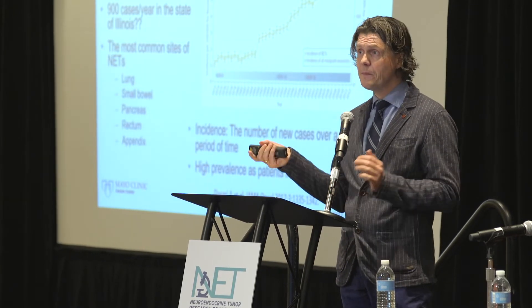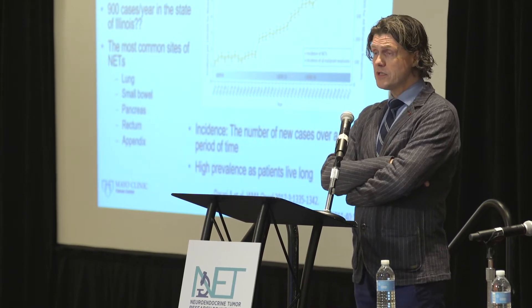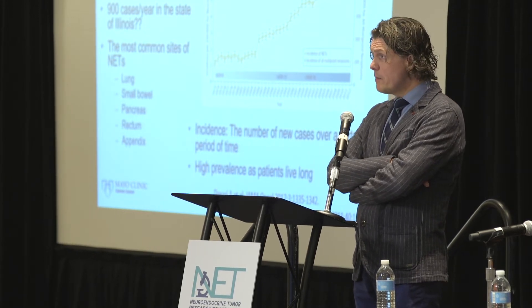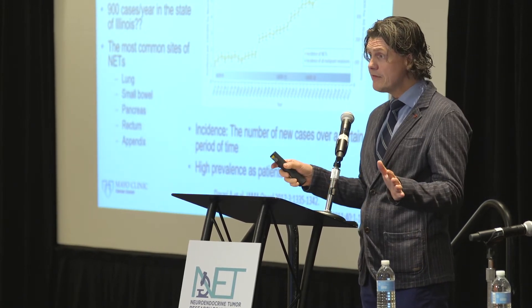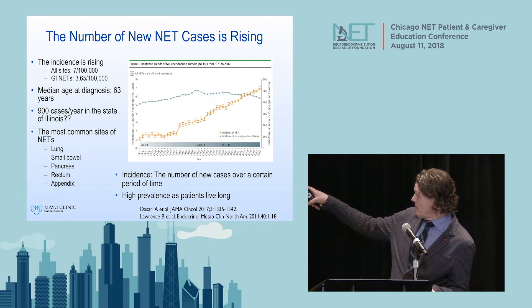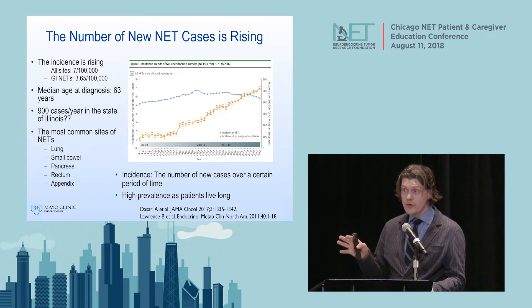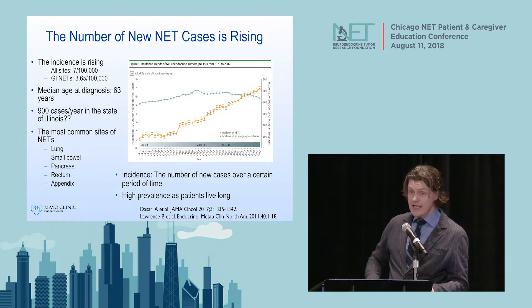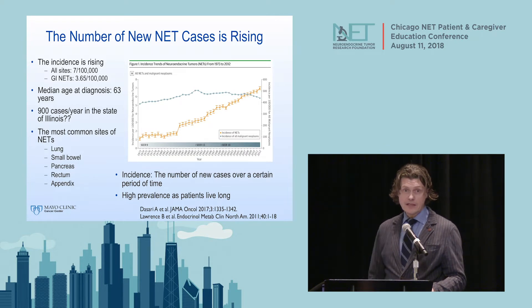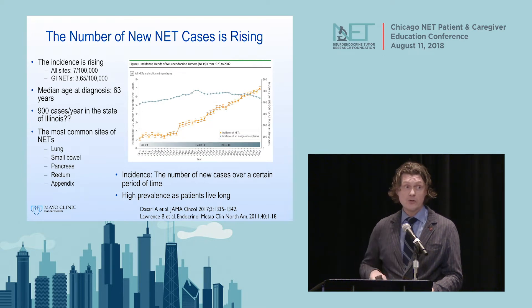How common are neuroendocrine tumors? They are not very common in terms of new diagnoses per year, but because patients with NETs live long compared to many other cancers, the total number of patients at any given time is fairly high. Looking at the graph, the blue line shows all cancers in the US since 1971, which hasn't changed much—hovering around the same level, going up slightly in the late 1980s and early 90s, and now actually coming down partly due to colon cancer screening.